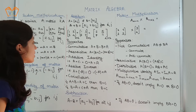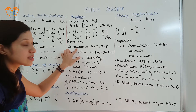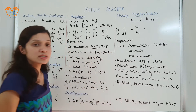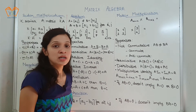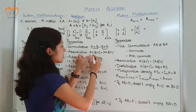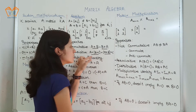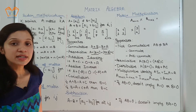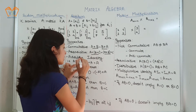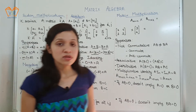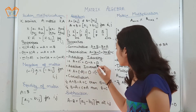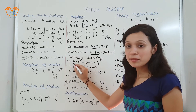Properties of addition. The first property is commutative — the sequence of addition does not matter: a plus b equals b plus a. The next property is associative — the way in which they are added also does not matter. Next is additive identity: the null matrix is called the additive identity because whenever the null matrix is added to any matrix, the resulting matrix is the same matrix.